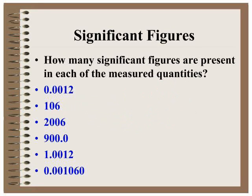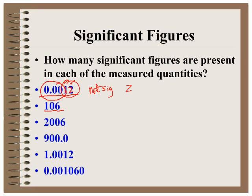Let's apply some of these significant figure rules — how many significant figures in each measurement? For the first example, the non-zero digits are at least two significant figures. Now look at the zeros — they come before the non-zero digits, so they are leading zeros and not significant. So there are only two significant figures in that measurement. For 106: the one and the six are significant, and the zero is a captive zero, so it's part of the measurement. All three numbers are significant.